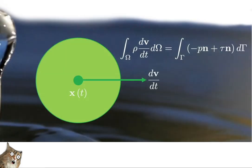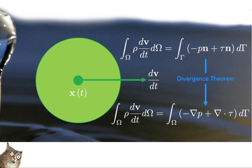The total force acting on our fluid volume is the integral over the whole surface of all the tractions, and now we can equate this to the momentum change of our fluid volume. One issue remains: we have a volume integral on one side and a surface integral on the other. Fortunately, we can alleviate this by invoking the divergence theorem to convert our surface integral into a volume integral — a trick we've seen before for rigid object mass matrices.